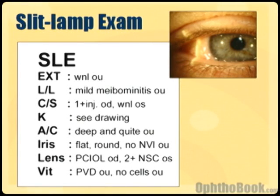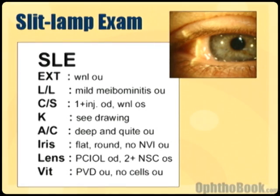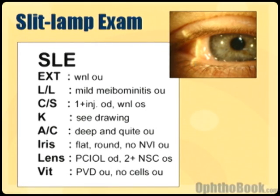The slit lamp exam. This is one of the places you're probably going to have the hardest time the first time you rotate through an ophthalmology clinic, because this is entirely new to you and it takes quite a bit of time to become proficient with a slit lamp. One of the problems you'll run into is how do you describe your findings? In ophthalmology we describe these things in the same order — this is just a way to organize our exam so that other people can understand it and to make sure we don't miss anything.